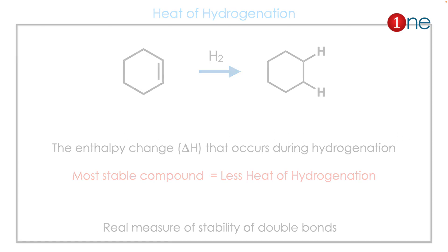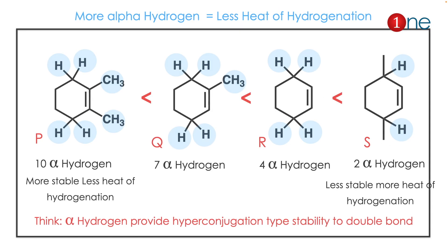The first fact is: more alpha hydrogens always leads to more stability, and so less heat of hydrogenation. If you look at the four compounds P, Q, R, S: the first compound has 10 alpha hydrogens, the second has 7, the next has 4, and the last has 2. So more alpha hydrogens means more stability due to hyperconjugation, and less heat of hydrogenation.